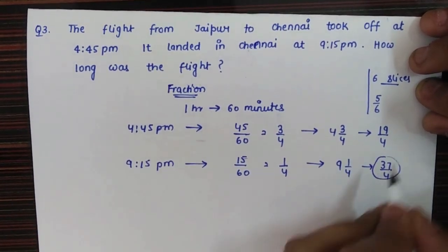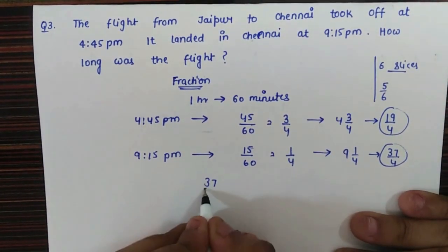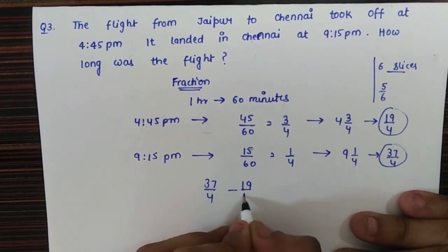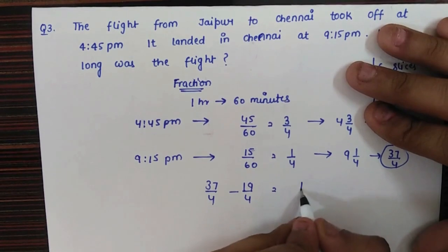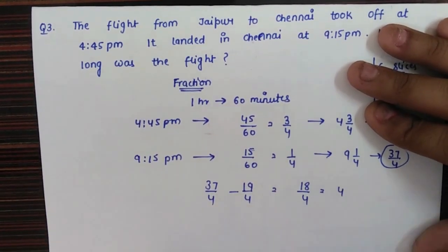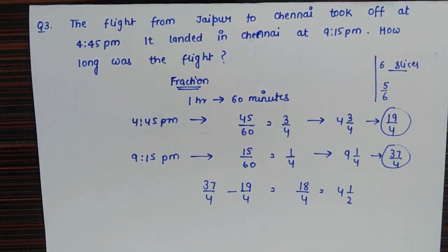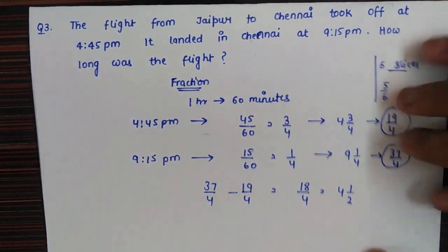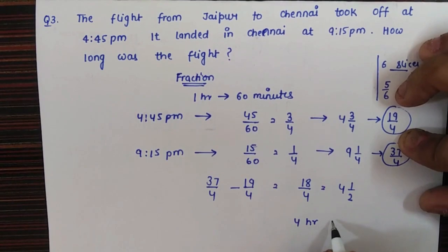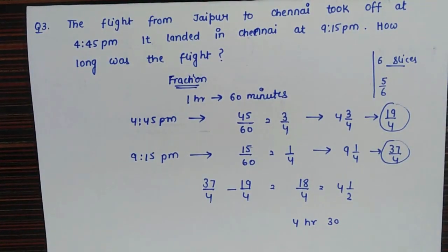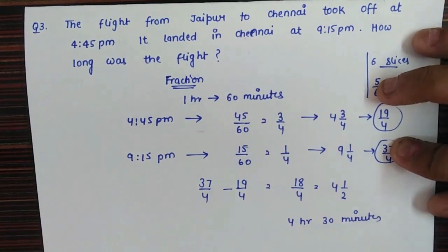Now we take the difference: 37/4 minus 19/4 equals 18/4, which simplifies to 4 and 1/2 hours. So the flight duration was 4 and a half hours. We can also write this as 4 hours and 30 minutes, since half an hour equals 30 minutes.